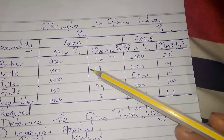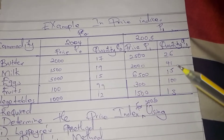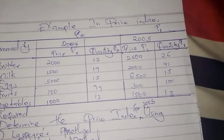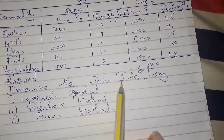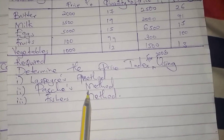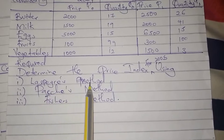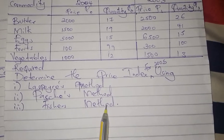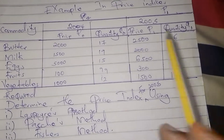They gave us the prices and quantities for both years 2004 and 2005. We are required to determine the price index for 2005 using three methods: the Laspeyres method, the Paasche method, and the Fisher's method.